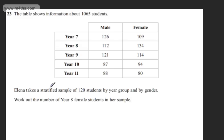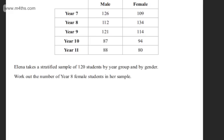This is question number 23. The table shows information about 1,065 students. Eleanor takes a stratified sample of 120 students by year group and by gender. We're asked to work out the number of year 8 female students in her sample.